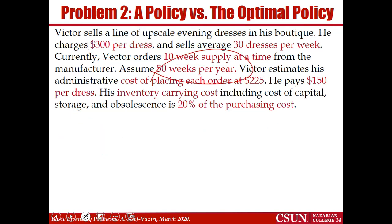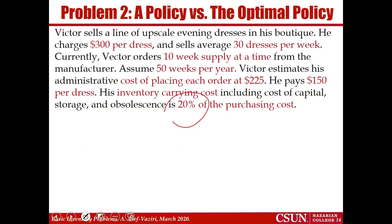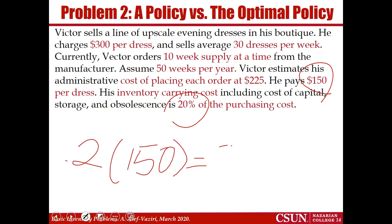We assume 50 weeks per year. Ordering cost S is equal to $225. Purchase price for each unit of product is $150. Carrying cost is 20% of $150 per unit of product per year. Therefore, it is 0.2 multiplied by 150, which is $30 per unit per year. And that is H.